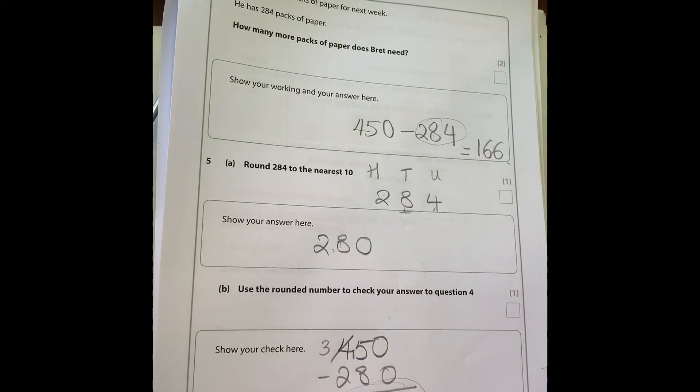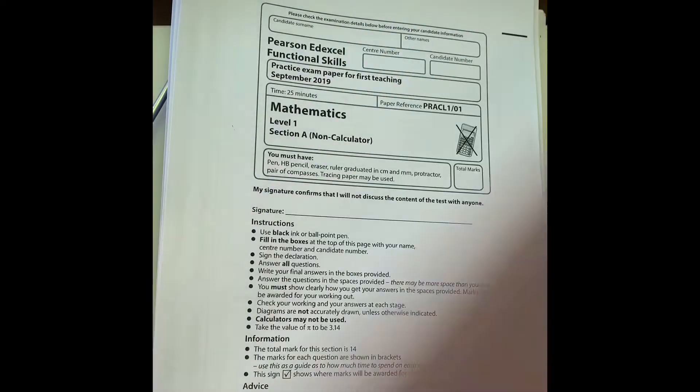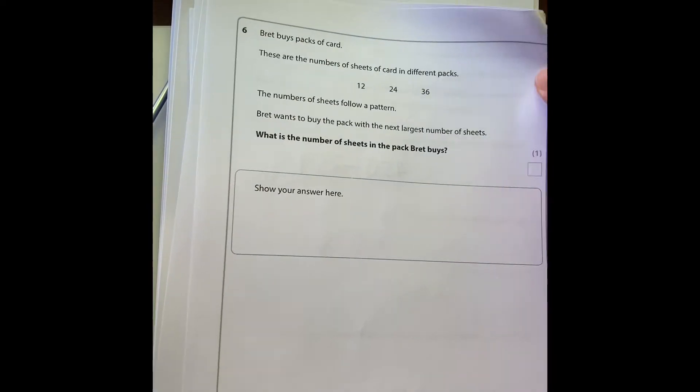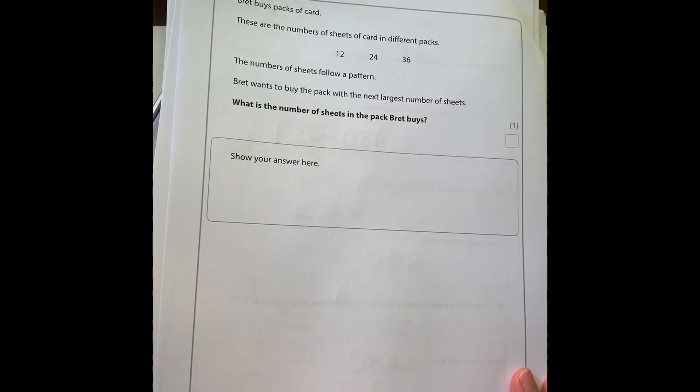Question six: Brett buys packs of cards. These are the numbers of sheets of card in different packs: 12, 24, 36. We're looking for the pattern. Hopefully you spotted that they are going up in 12s. He wants to buy the pack with the next largest number of sheets, so the next one in the 12 times table would be 48.